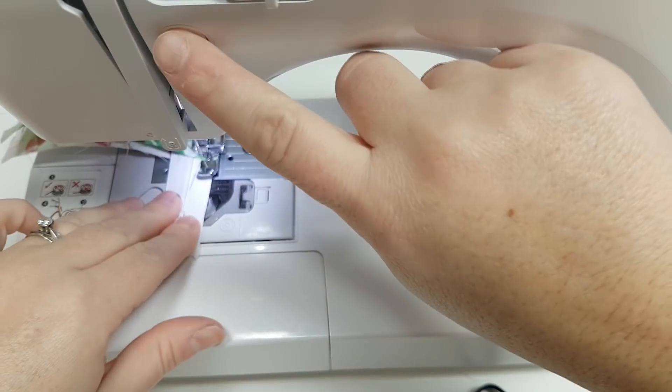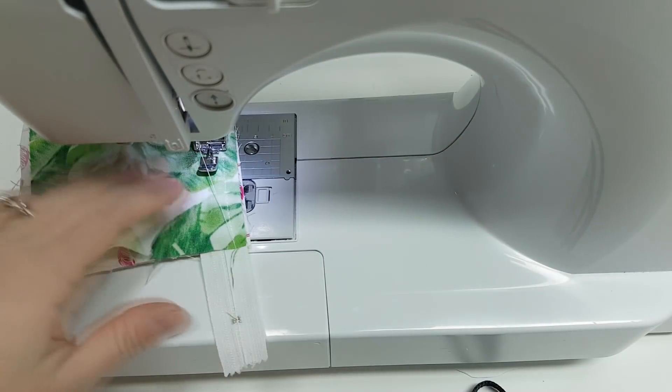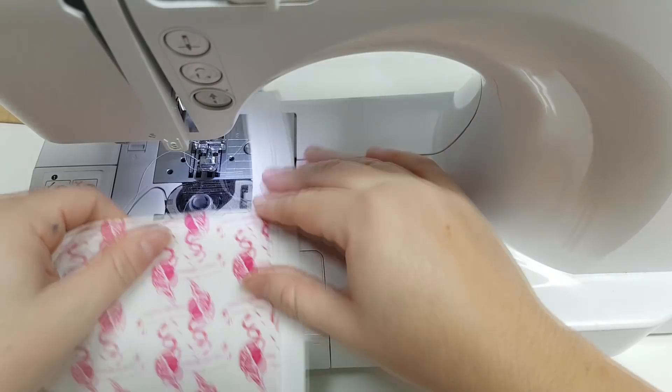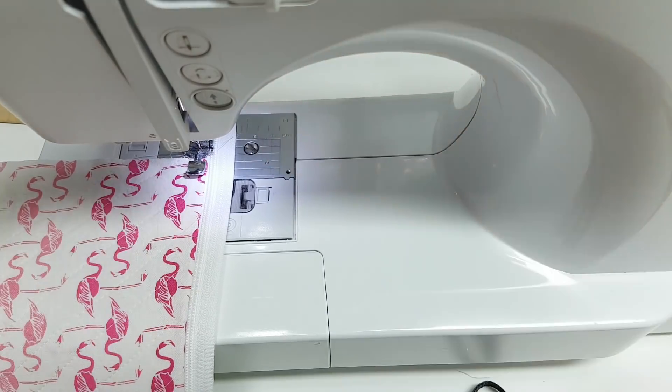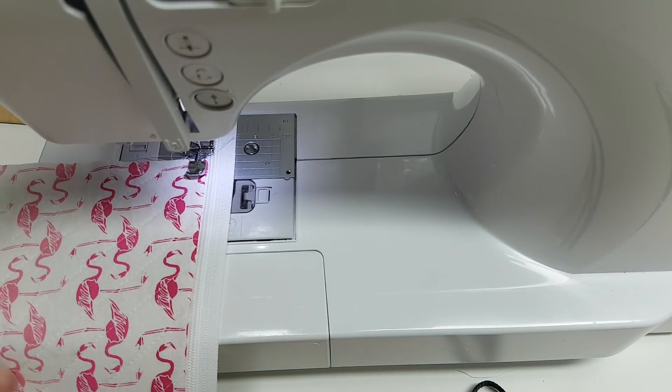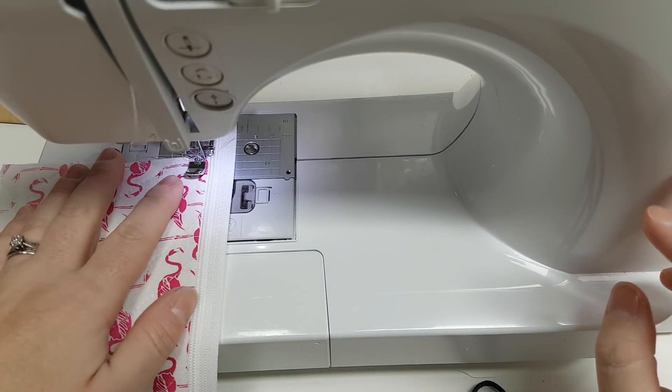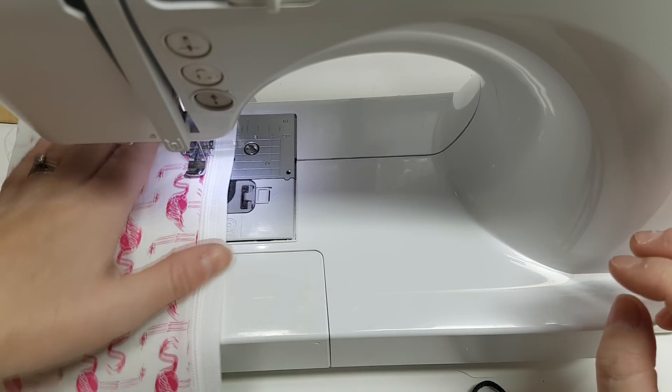And then we will flip it right sides out and we will do a top stitch. And I like to up my stitch length up to a three when I do my top stitches just because I think it looks a little bit nicer.